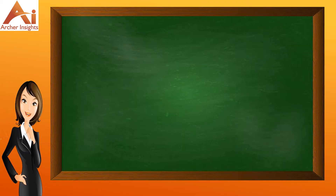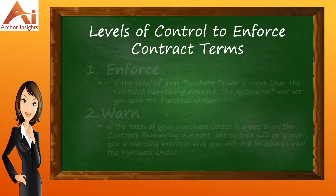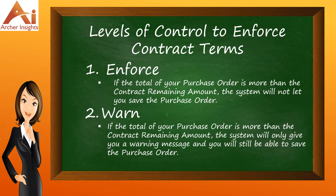To enforce the terms of a contract when creating purchase orders, there are two levels of control. The first is enforce — if the total of your purchase order is more than the contract remaining amount, the system will not let you save the purchase order. The second level is warn — if your purchase order total is above the contract remaining amount, the system will only give you a warning message but you will still be able to save the purchase order. For this demo, the level of control in place is enforce.